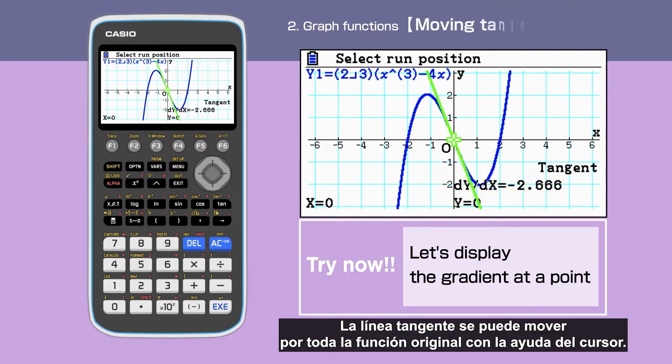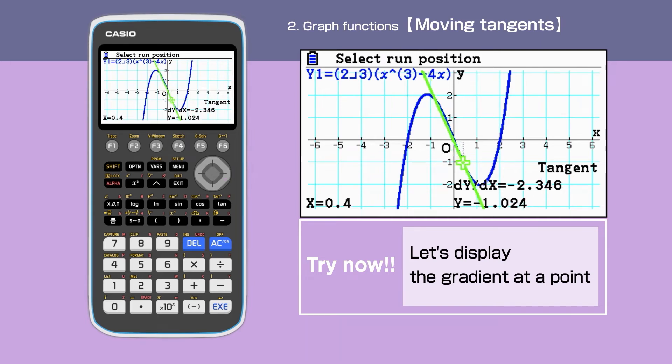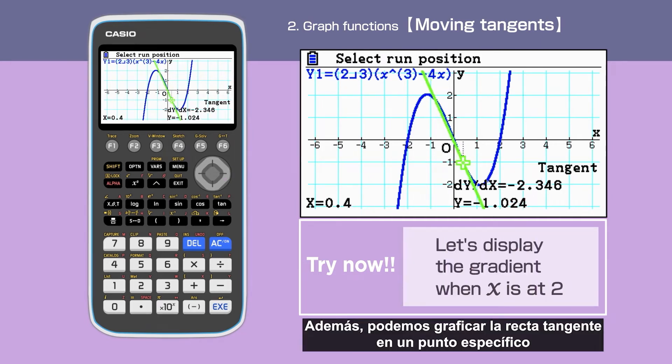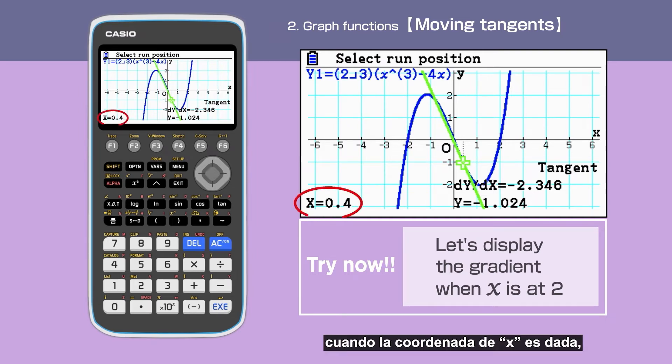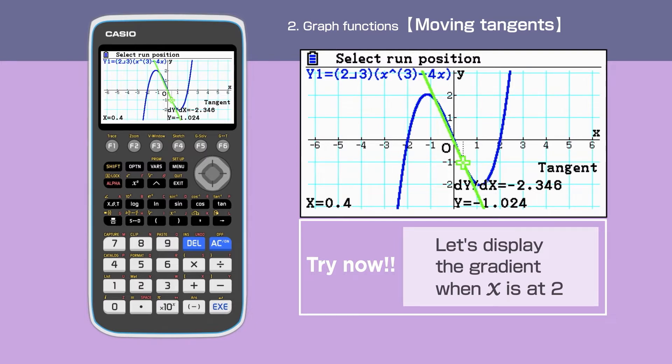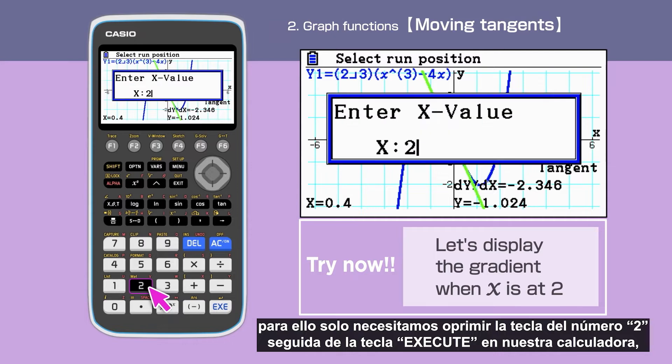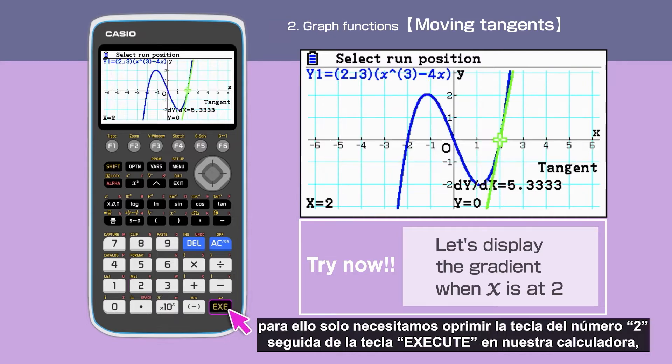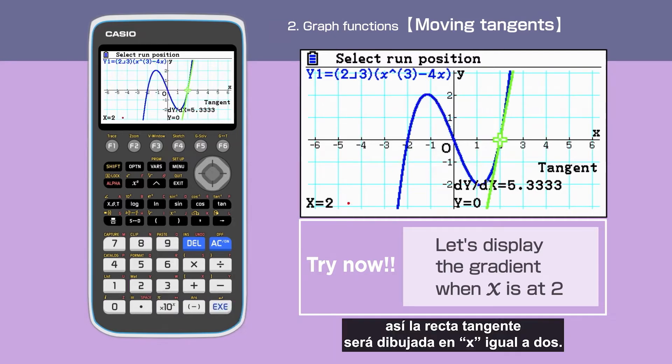The tangent line can be moved along with the original function by moving the cursor. In addition, we can draw a tangent at a specific point when the x coordinate is given. Let's draw a tangent when x is at 2. We only need to enter 2 and execute in our calculator. The tangent is drawn at x equals 2.